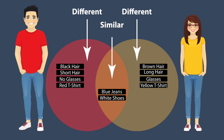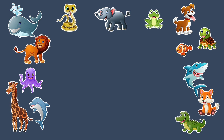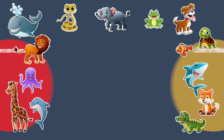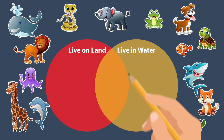A Venn Diagram makes it very easy to see the similarities and differences. In this example, we have a whole bunch of animals. Some of them live on land, some of them live in water, and some live in both. Let's create a Venn Diagram. The red circle has animals who live on land. The yellow circle has animals who live in water. The overlapping part is for animals who live on land and water.